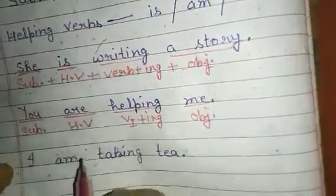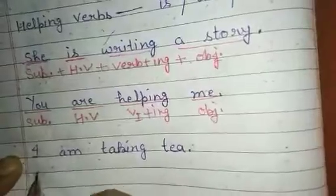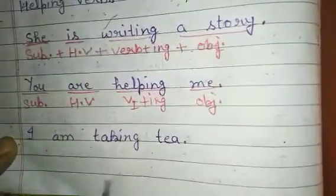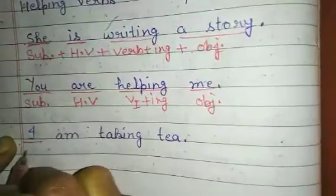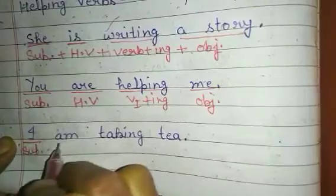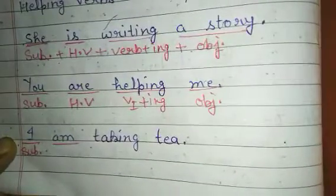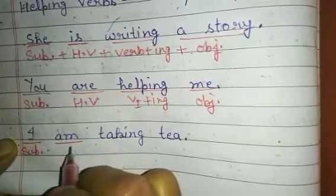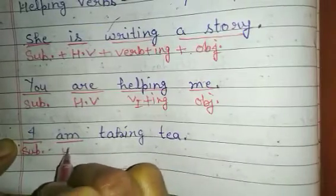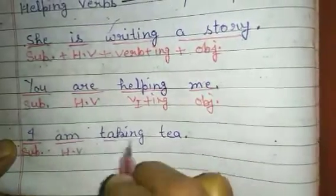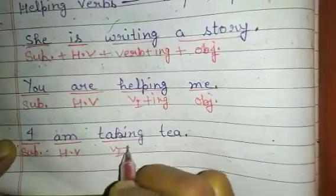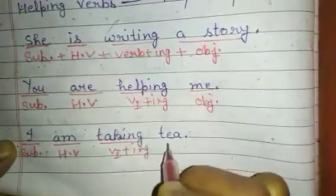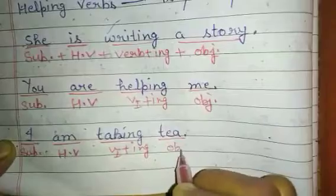In the last sentence: 'I am taking tea.' 'I' is the subject, and with the subject 'I' we use the helping verb 'am.' 'Taking' is verb plus -ing, and 'tea' is the object. So all these sentences follow the same formula.